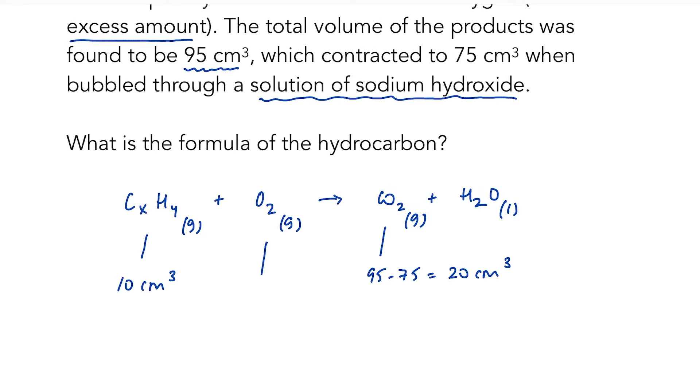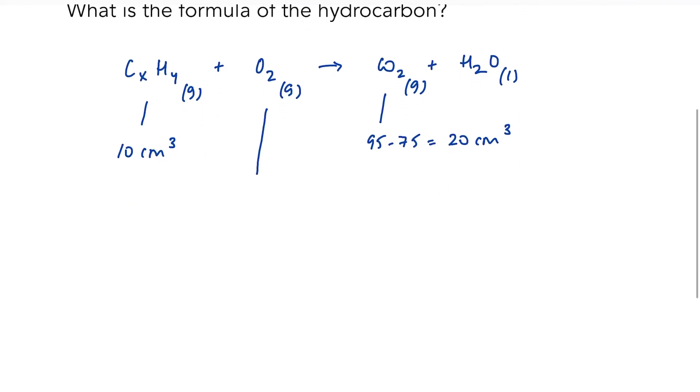What about the oxygen? I know that I started with 100 centimetres cubed, but some of that was in excess. The final volume of the products was 95 centimetres cubed. Take away the carbon dioxide, we're left with 75 centimetres cubed. So I've got 75 centimetres cubed of unreacted oxygen in my final products. So obviously the volume of oxygen that did react was 25 centimetres cubed.